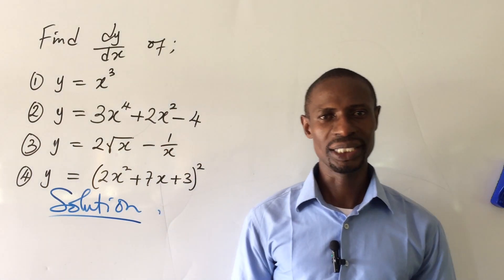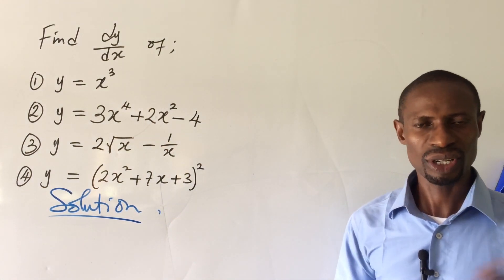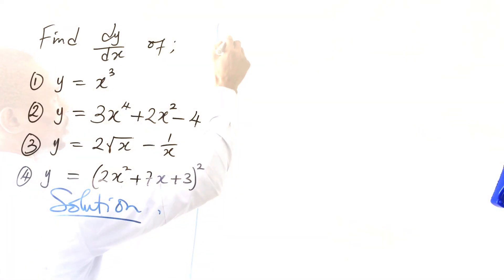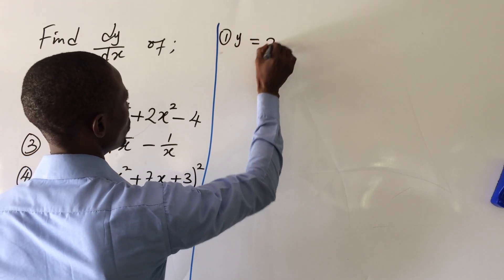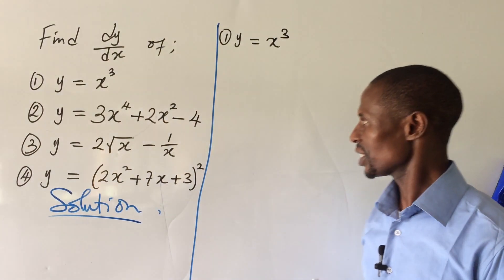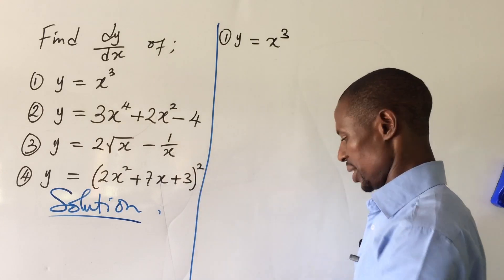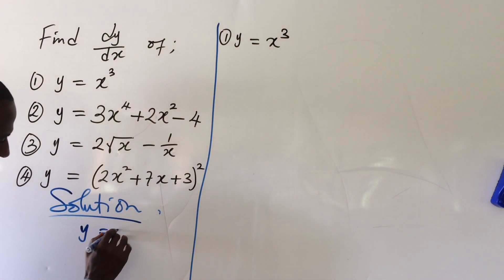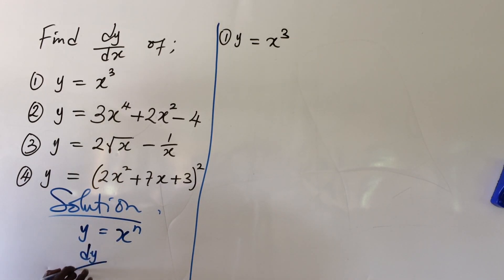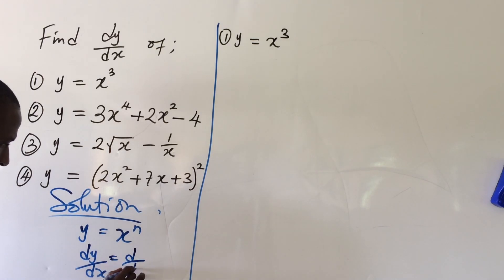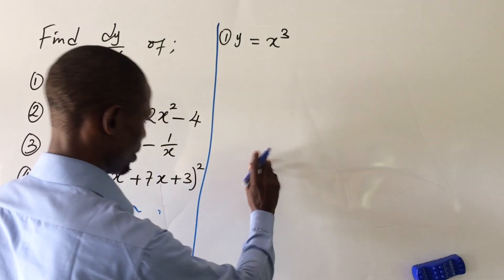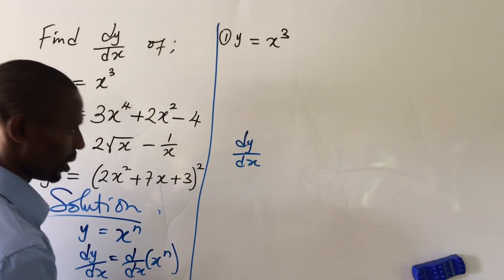We're going to use the formula method in handling these challenges. Now, in the first principle approach, I would use the first principle to differentiate, but here we use the formula. The formula states: if y is a function equal to x to the power of n, then dy/dx — the change in y with respect to x — is the derivative of that function.